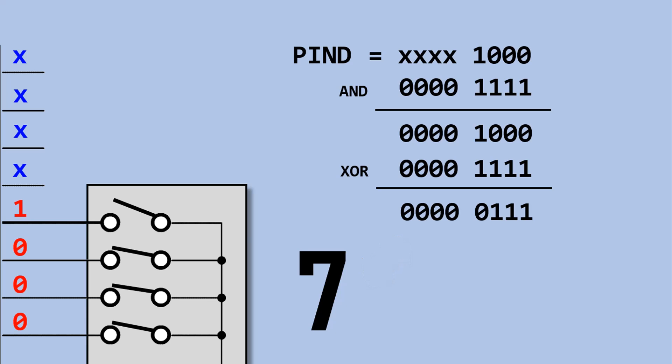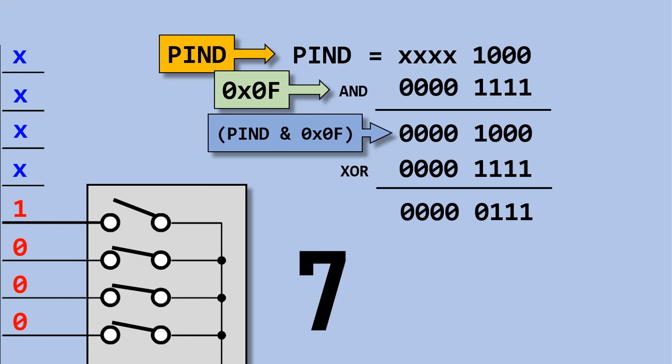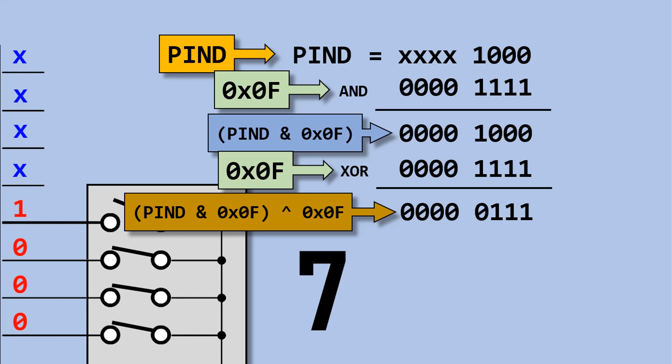Let's recap. This is PIN D content. Perform AND operation with 0F. Take this result and perform exclusive OR operation with 0F. This is the result.